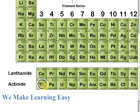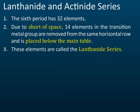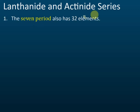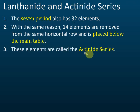Those elements from period seven are placed below the main table and called the actinide series. So the two rows below the periodic table come from period six and period seven — they are supposed to be in the main table, but there isn't enough space, so they are placed below. These are the lanthanide series and the actinide series.